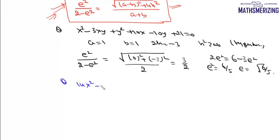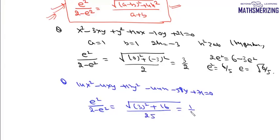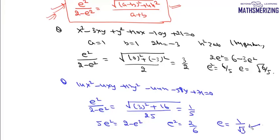Now let us take one question for an ellipse. Suppose the equation is 14x² - 4xy + 11y² - 44x - 58y + 71 = 0. We write e²/(2 - e²) = √[(a - b)² + 4h²] / (a + b). Here a - b = 14 - 11 = 3, so (a - b)² = 9, and (2h)² = 16, giving √(9 + 16) = 5. And a + b = 25, so the ratio is 5/25 = 1/5. Solving, 5e² = 2 - e², so e² = 2/6 = 1/3, and e = 1/√3. That is the eccentricity of the given ellipse.